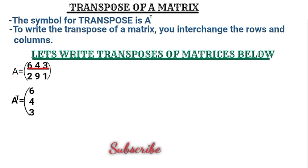What was at the beginning reading left to right comes on top, what is in the middle stays in the middle, and the last element goes to the bottom. Then the same thing happens to the second row: two, nine, one becomes the second column. So we write two, nine, one as the second column and close the bracket. This is the correct transpose of matrix A.